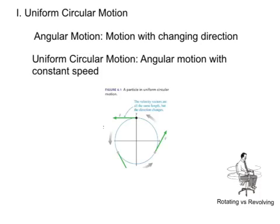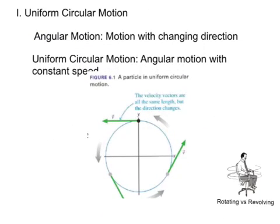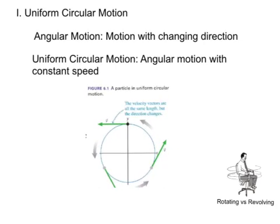All of the motions that we've dealt with so far have been straight line motions. We haven't dealt with objects changing direction during their travel. That type of motion is called angular motion, motion with changing direction. A special type of angular motion is uniform circular motion, angular motion with a constant speed. However, the direction changing constantly gives it an acceleration because velocity is a vector. Vectors have both magnitude and direction. So if we change the direction, we're changing that velocity vector, so we're getting an acceleration.